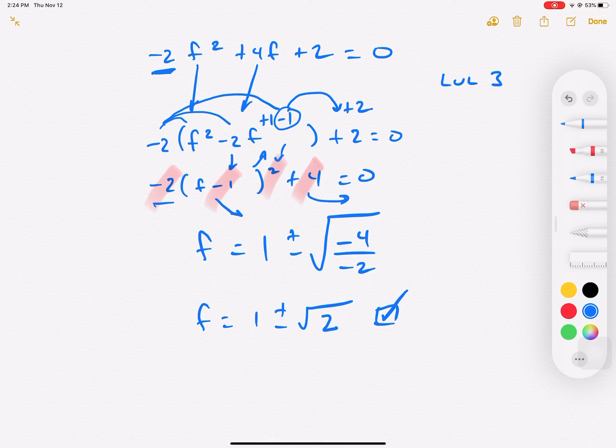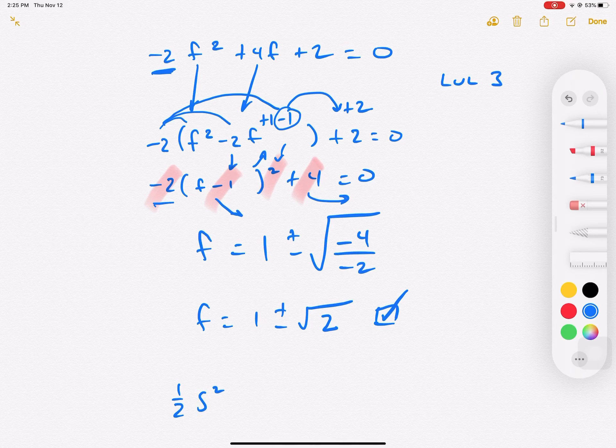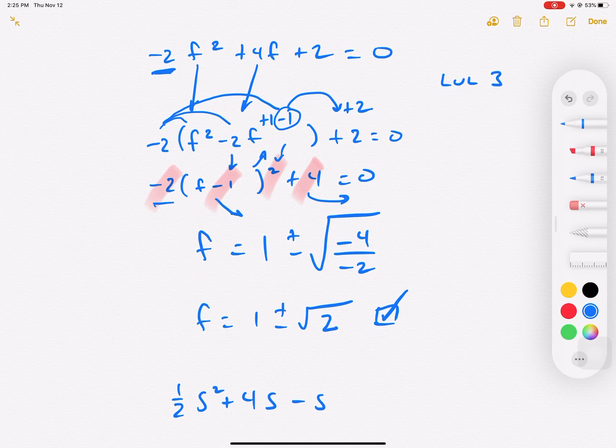Now I'm going to write something else, just to talk about another example. I'm going to say 1 half - oh, let's use a different letter. Why not call it s squared. Plus, let's do 4s minus 5 is equal to 0.